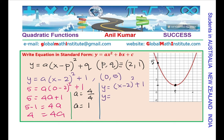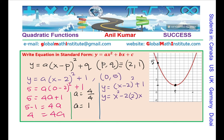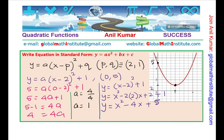Expanding (x minus 2) squared gives x squared minus 4x plus 4, and then we add 1 to get x squared minus 4x plus 5. So we get our equation in standard form: y equals x squared minus 4x plus 5. As a check, 5 is the y-intercept, and the value of a equals 1 is the leading coefficient. I hope the steps are absolutely clear.